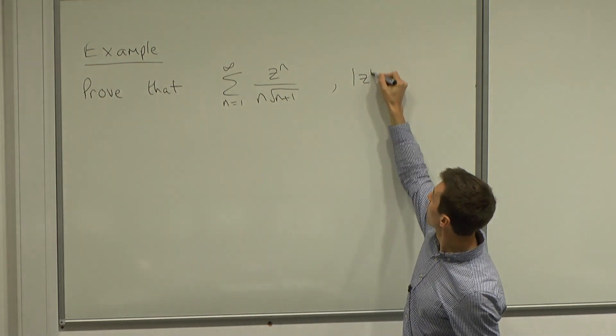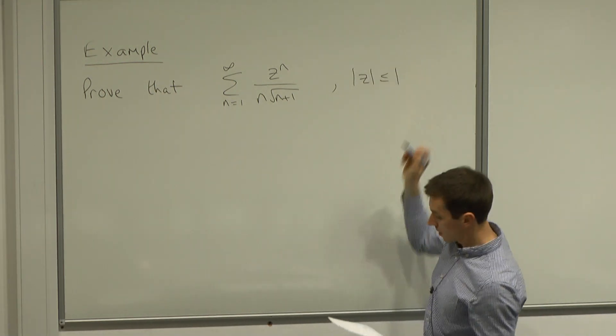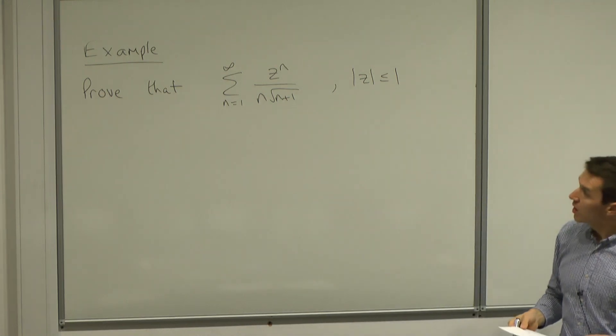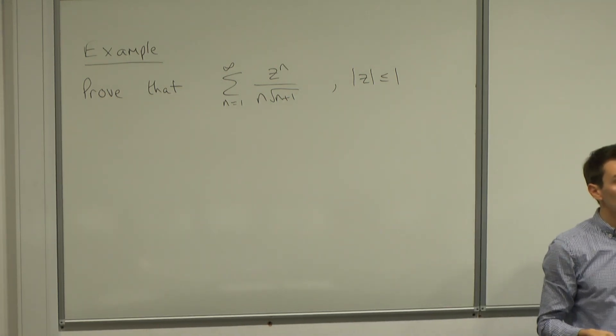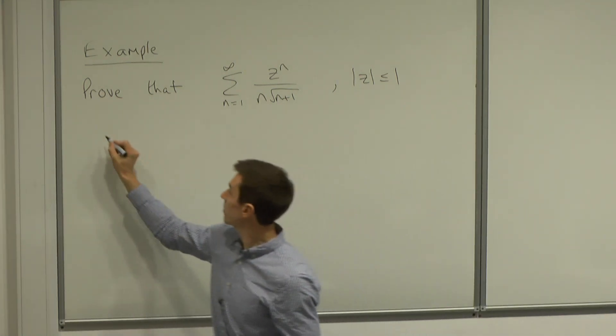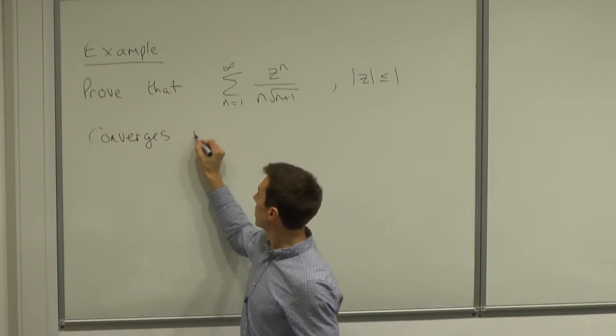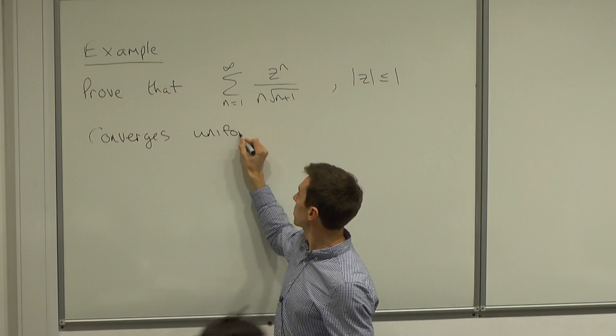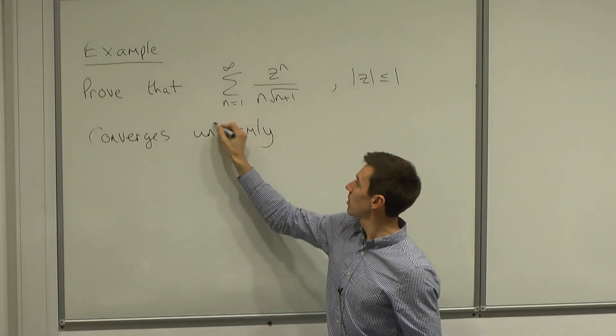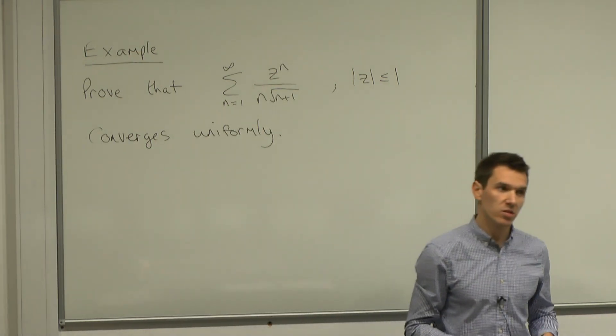where the modulus of z is less than or equal to 1, and we want to prove that this converges uniformly. And we are going to use Weierstrasser's M test to do this.